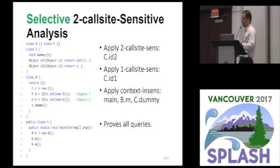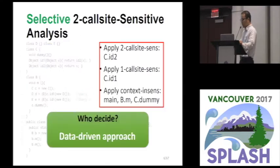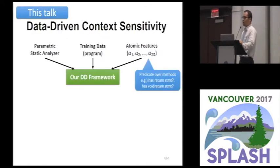Our selective two call-site-sensitive analysis equips a heuristic which assigns context depths to each method. As a result, it can prove all queries without wasting resources. The key question is, who decides such heuristic before we analyze the code? Our answer is a data-driven approach. In this paper, we introduce a data-driven framework for automatically learning context sensitivity heuristics from codebases. Our framework takes three main inputs: parametric static analyzer, programs as training data, and atomic features about method definitions.